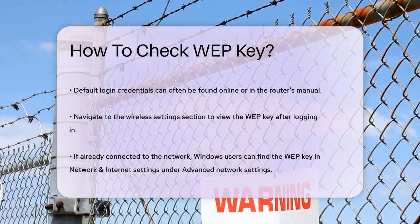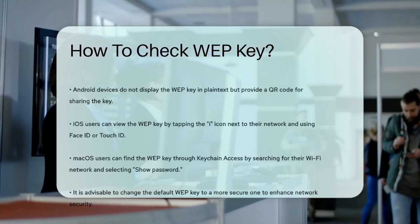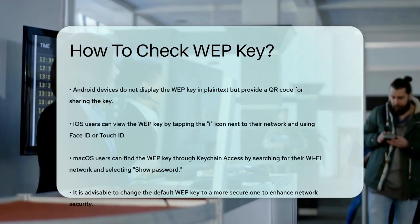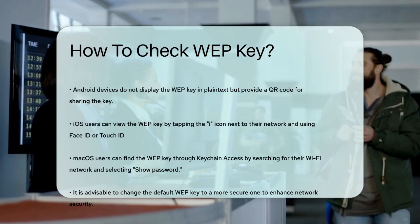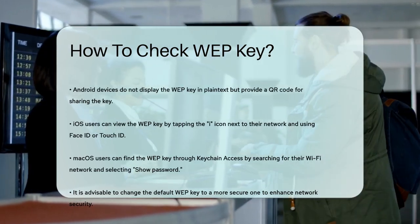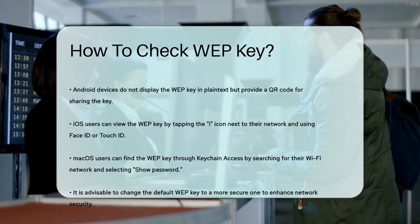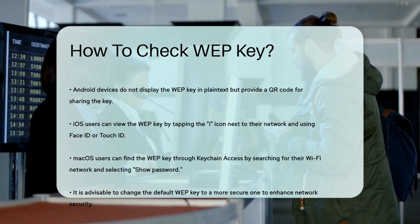On Android devices, you can't see the network security key in plain text, but you can find a QR code that shares the key. Go to Settings, then Wi-Fi, tap on the network and look for the QR code option.